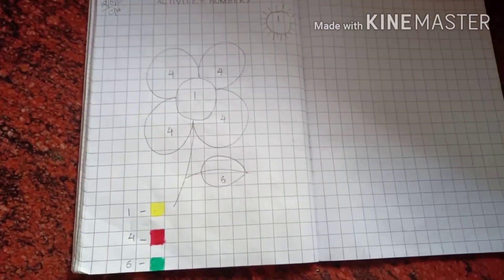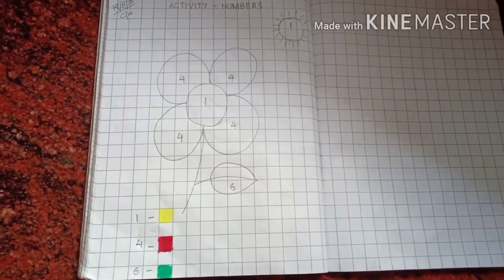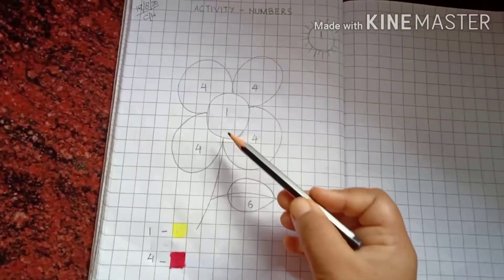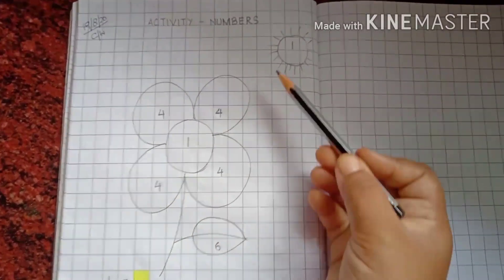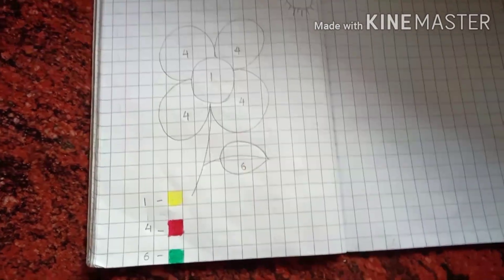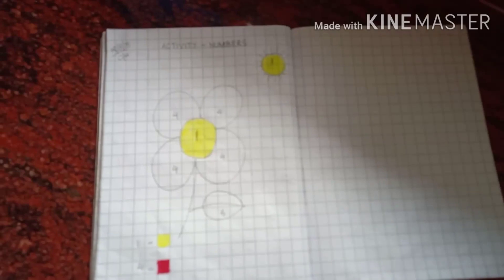So, what we have to do is wherever we find number 1. Here, we have number 1. And, in the sun, we have number 1. So, we will color with yellow color. Like this.